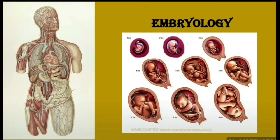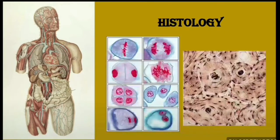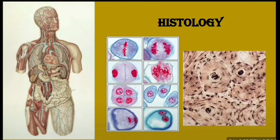Next is histology, also called microscopic anatomy. It is the study of the structures of different tissues — specifically what cells are present in those tissues.